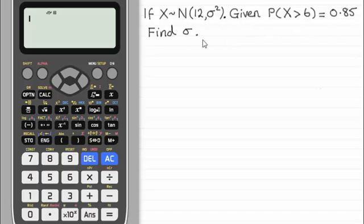In this video I've got a question here where we've got to find the standard deviation sigma from this normal distribution where we have a random variable x that's normally distributed with a mean of 12 and the variance is sigma squared. So we're given the probability of being greater than 6 is equal to 0.85 and we've got to find the standard deviation.